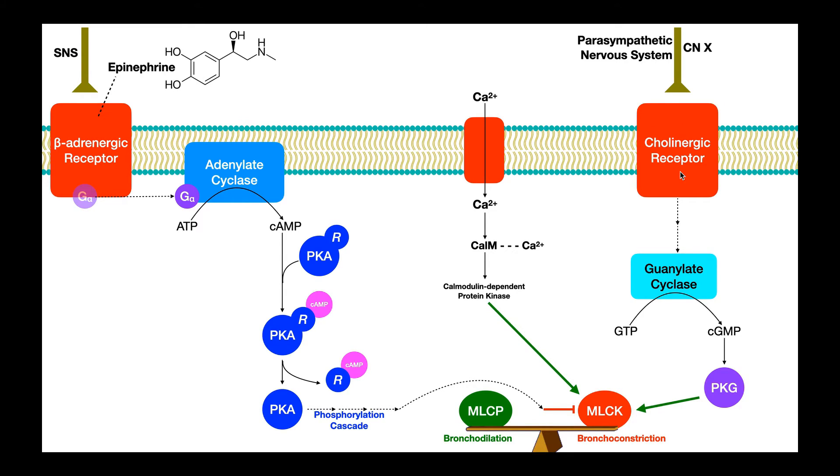And cholinergic receptors are receptors that bind acetylcholine. I don't have that shown here, but basically these neurons would release acetylcholine, which would then bind to the cholinergic receptor and activate it. And once the cholinergic receptor has been activated, there are mechanisms to cause the activation of this enzyme, which is generally soluble inside the cytoplasm of the cell. It's called guanylate cyclase.